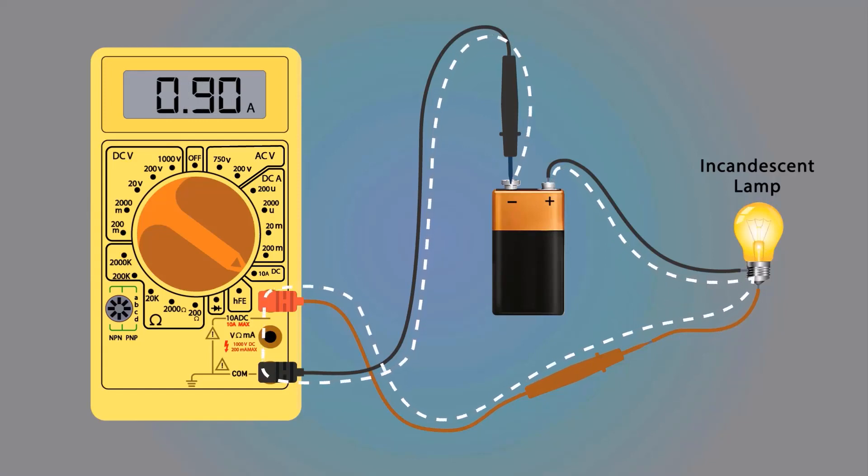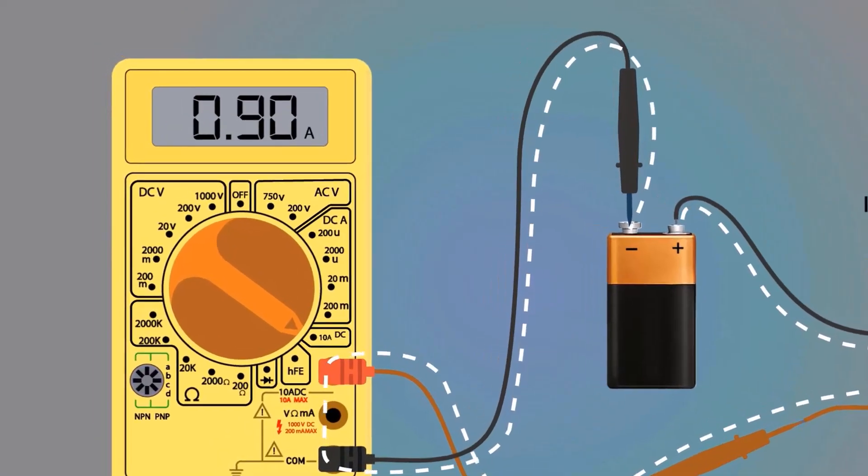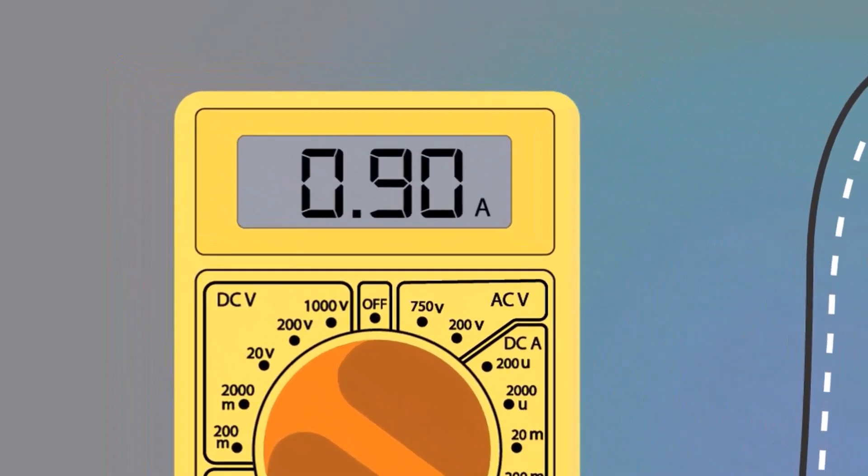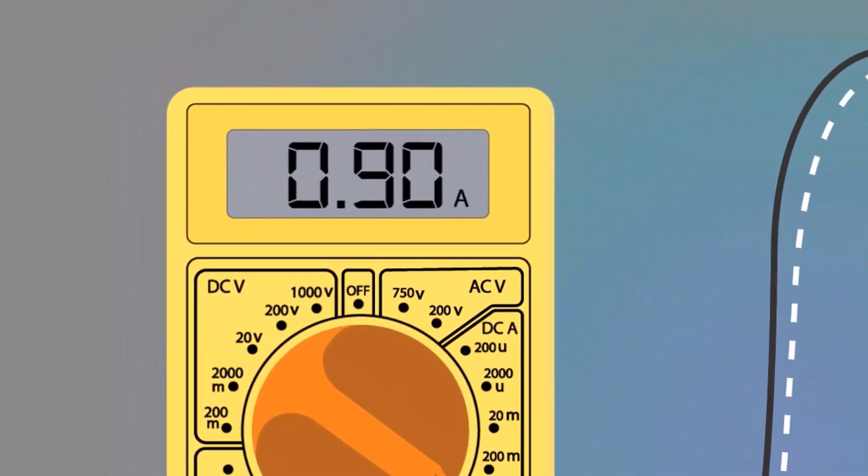The circuit is completed and current is flowing from the negative terminal to the positive terminal of the battery through the incandescent lamp. That flowing current we are measuring. The multimeter display is showing 0.9 amperes, which the incandescent lamp is consuming.